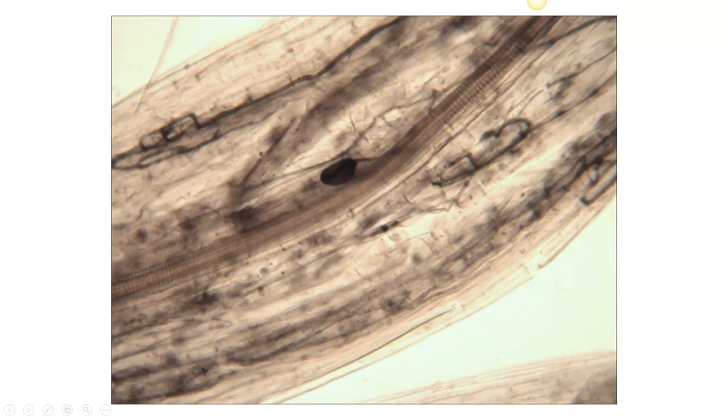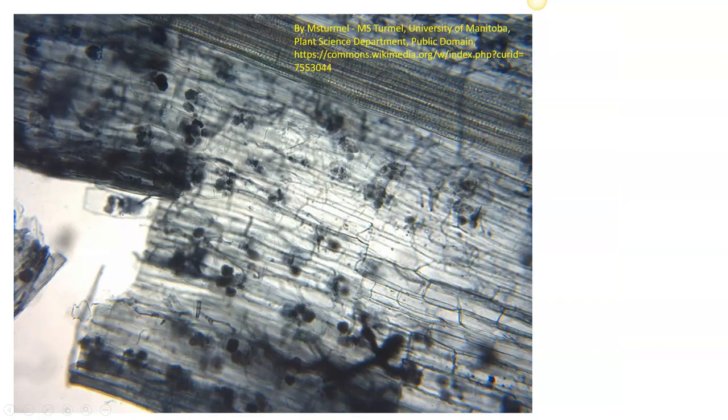You can see what looks like vesicles also. You can see what looks like the little Christmas tree-like structures if you look around. That's why these things are called vesicular arbuscular mycorrhiza. Sometimes they're just called arbuscular mycorrhiza.